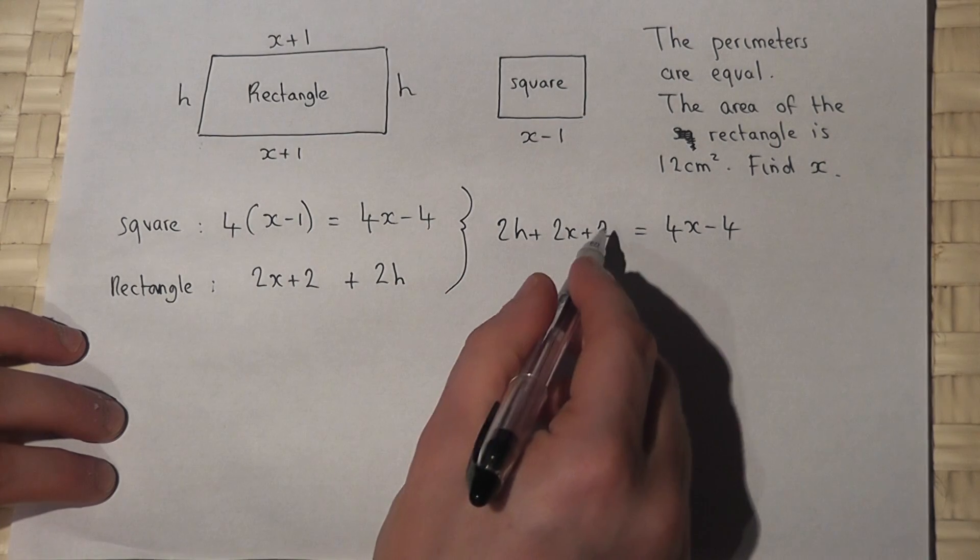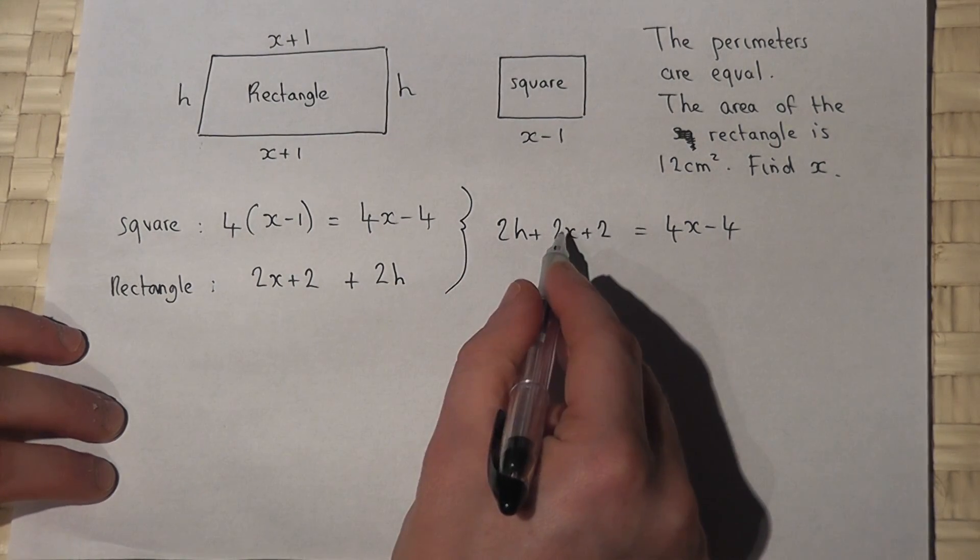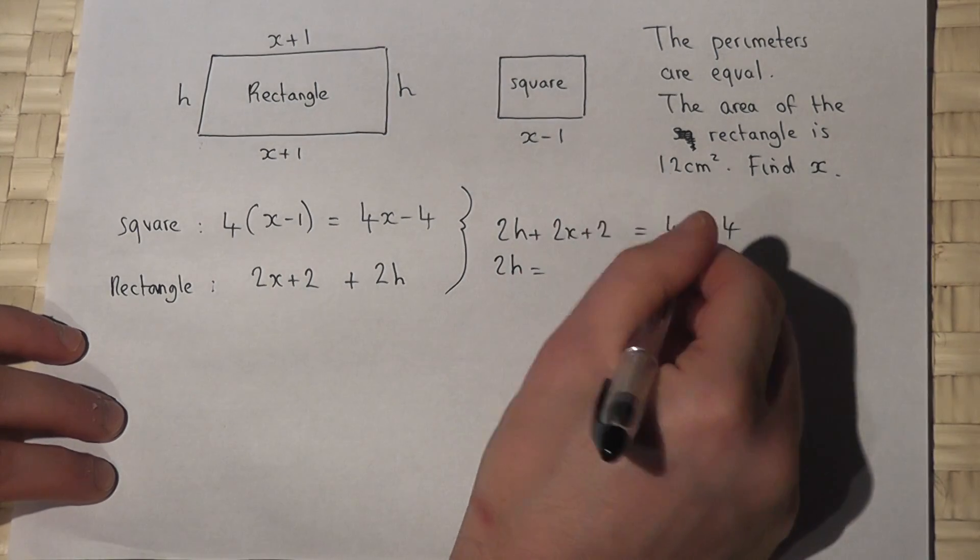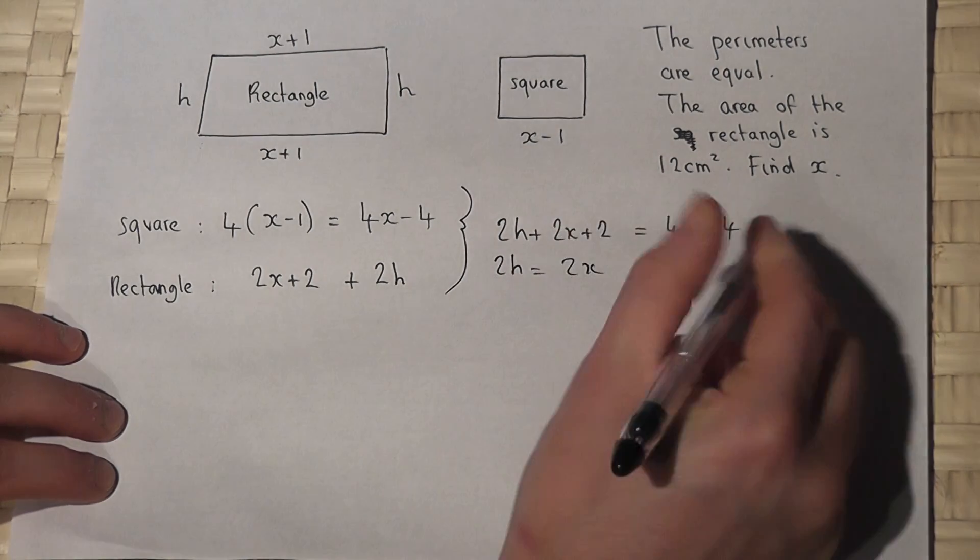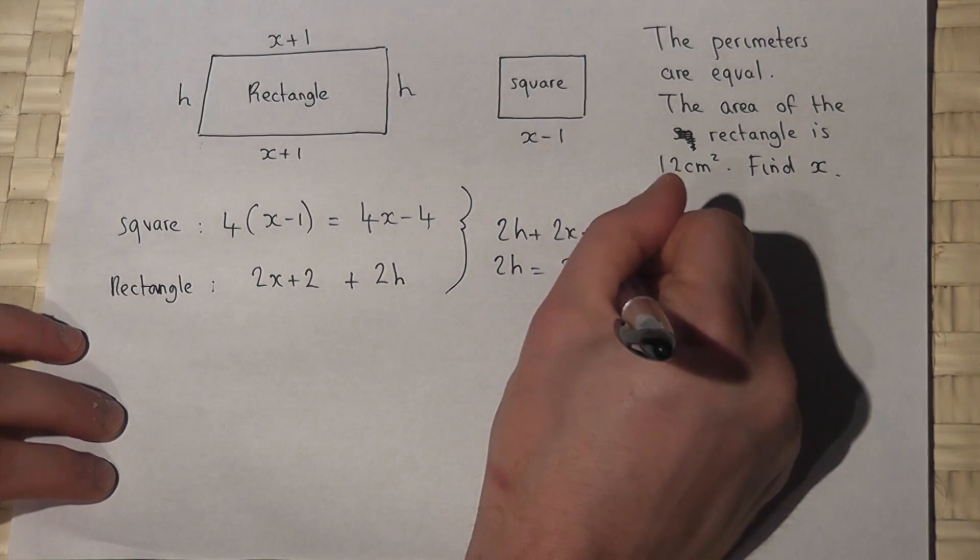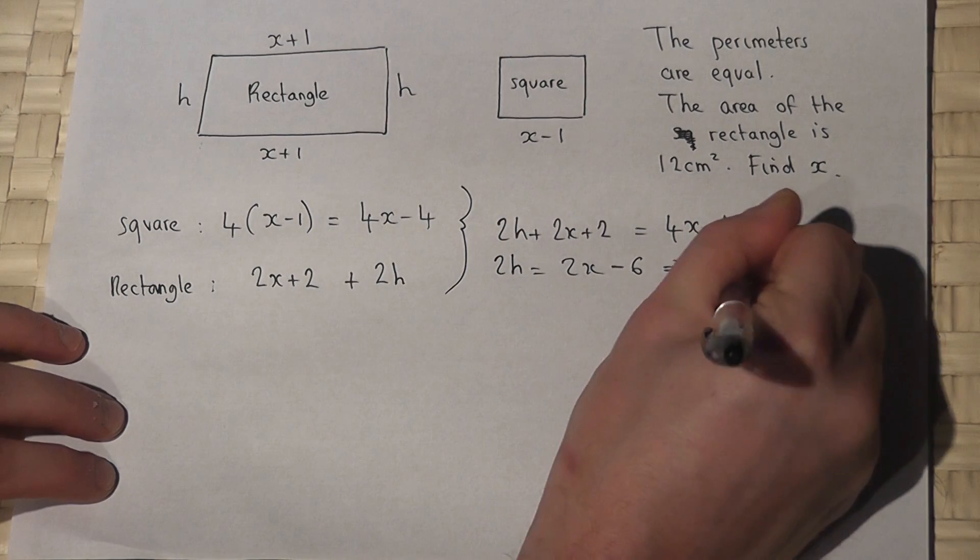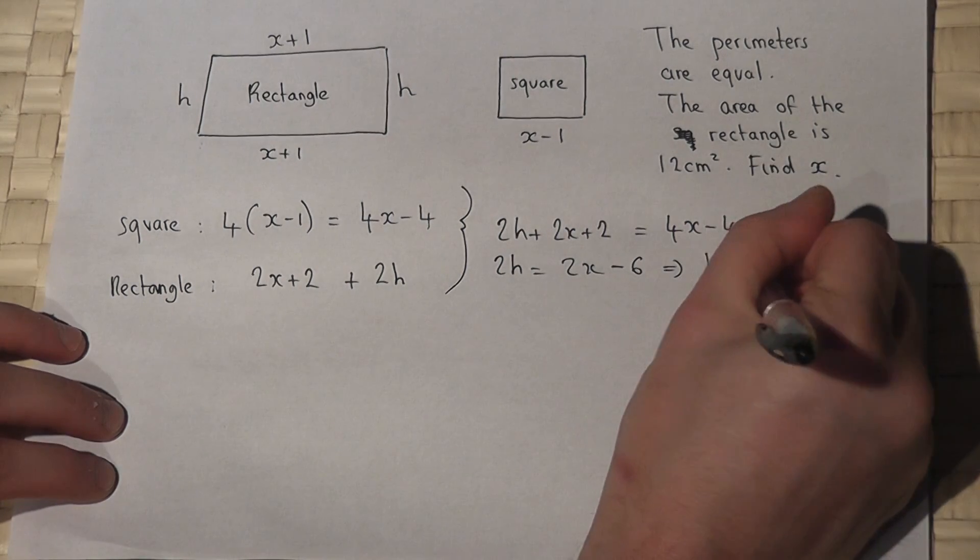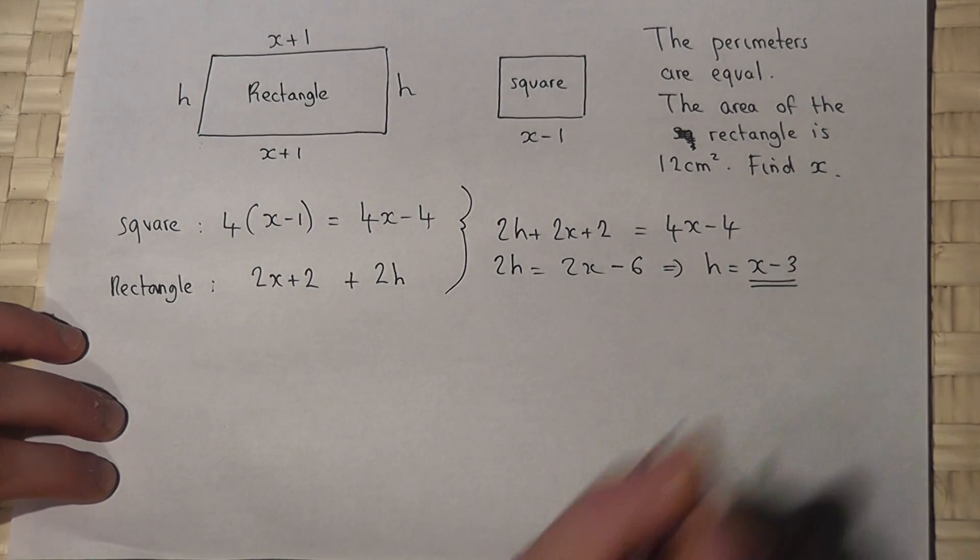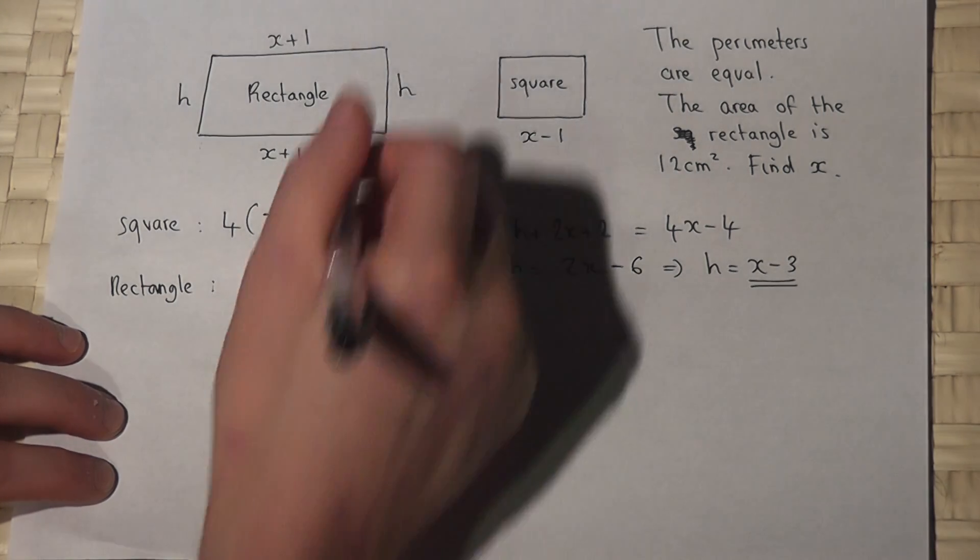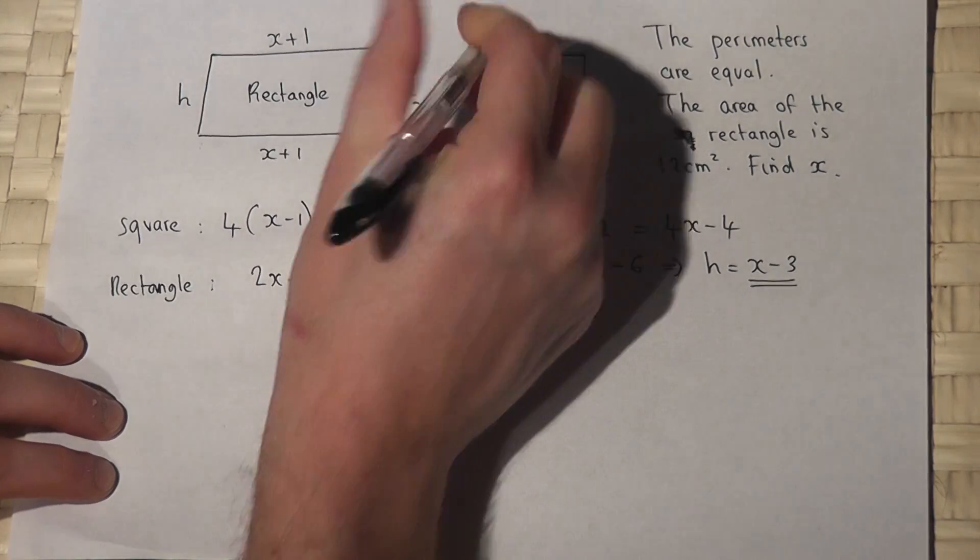So I can take away 2 and take away 2x. So 2h, take away 2x, we get 4x take 2x is 2x, minus 4 take away 2 is minus 6. So in terms of x, h is just divided by 2, x minus 3. So the height of the rectangle in terms of x is x minus 3.